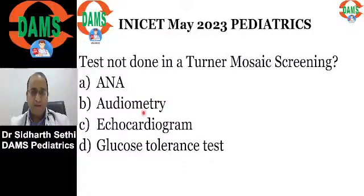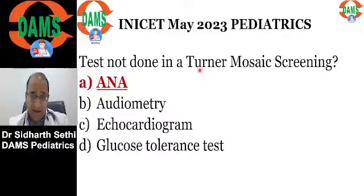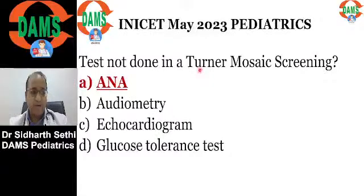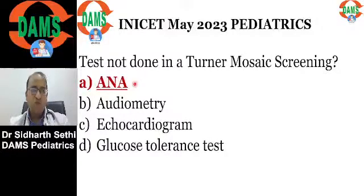ANA has no role in Turner syndrome. Turners are at risk of autoimmune disorders like thyroiditis, so thyroid function tests should be done. Remember, ANA is especially useful in Klinefelter syndrome. Klinefelter syndrome patients are at risk of rheumatoid arthritis and SLE, so ANA is important for Klinefelter, not for Turner syndrome.